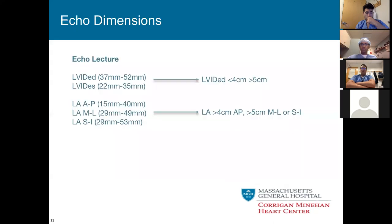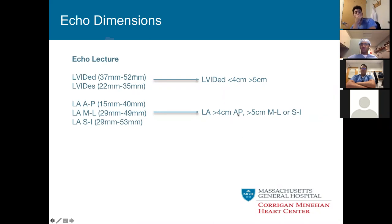On basic echo dimensions, it's important to have a general sense of what's big and small. The two key ones are the LV and left atrium. The important LV measurement is always in end diastole: less than 4 cm is small (close to the 37 mm cutoff), greater than 5 cm is a big LV. For the left atrium: in the AP view anything greater than 4 cm is big; in the superior-inferior or medial-lateral dimension, anything greater than 5 cm is big. As a starting point, think 4 and 5 centimeters.